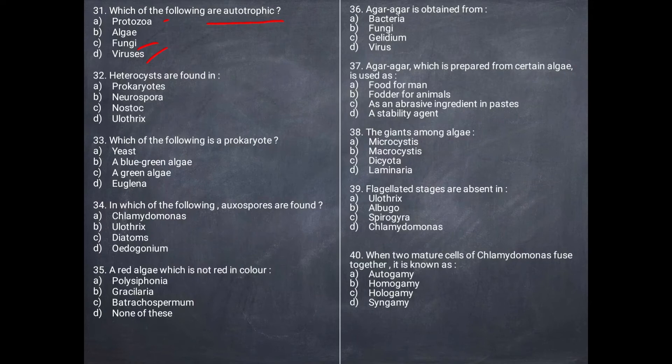Next question: Heterocyst is found in which organism? We get heterocysts in Nostoc algae.